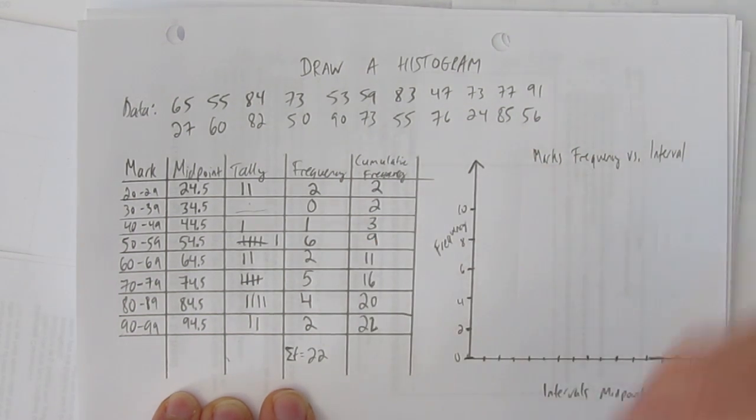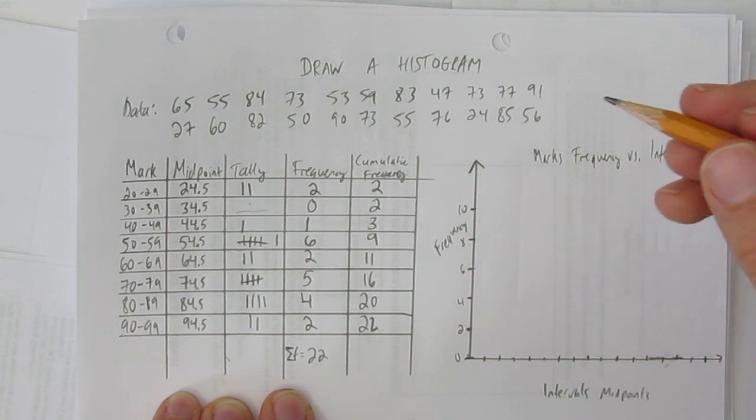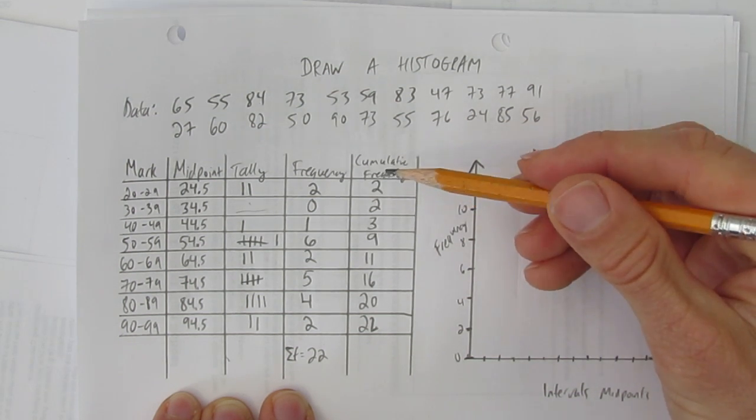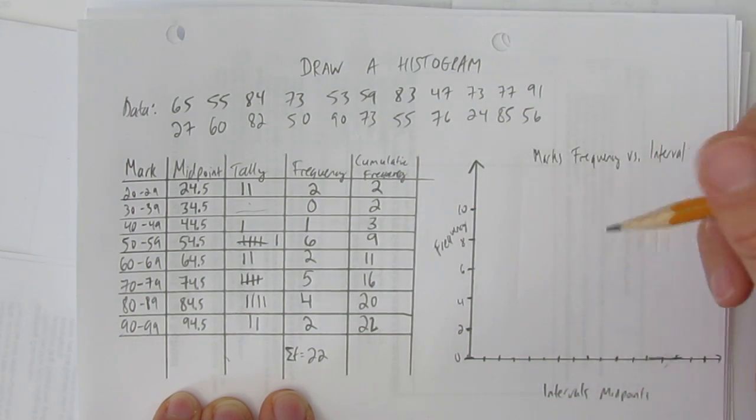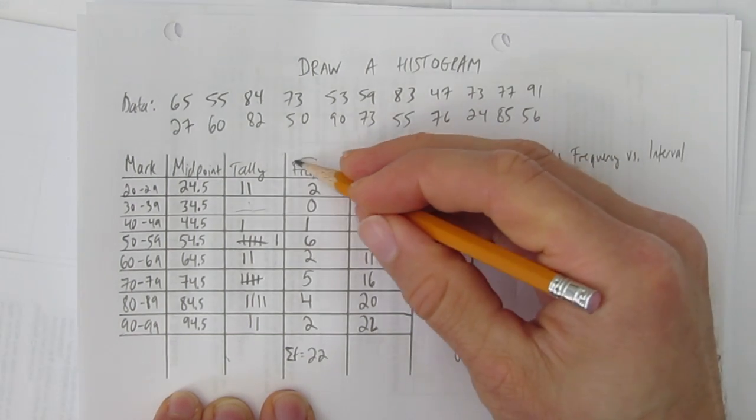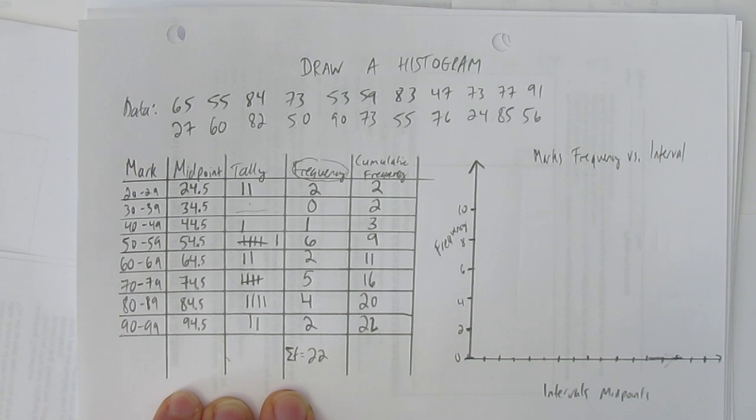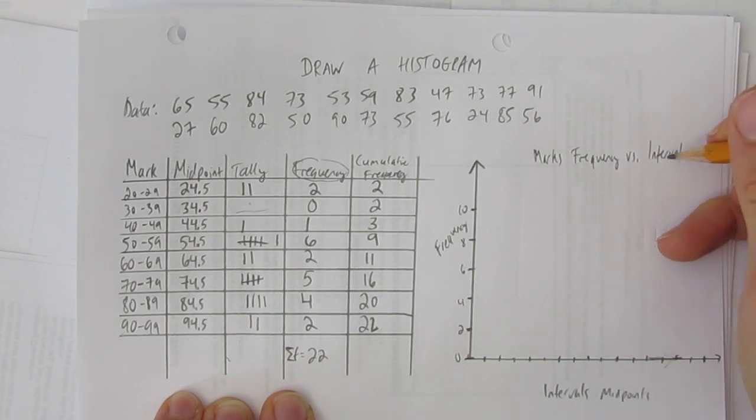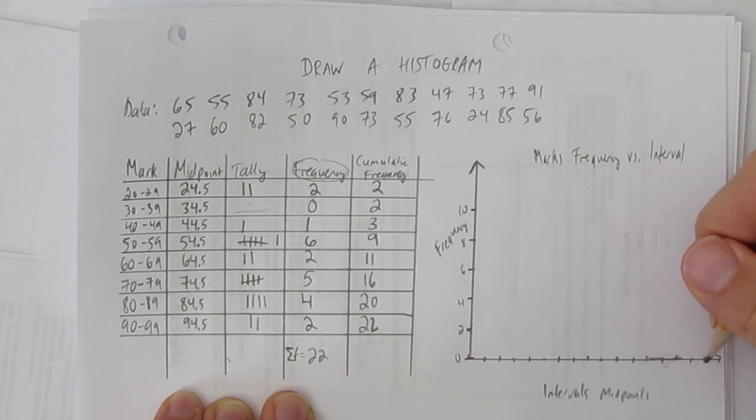But I'm not doing mean here. I just want to draw a histogram. Sometimes, you'll be asked to draw a histogram of cumulative frequency versus the midpoints. But in this case, I've asked for mark's frequency. So just using this column, I better circle it so I don't use the wrong one. And I want to draw mark frequency versus interval. So, a few things.